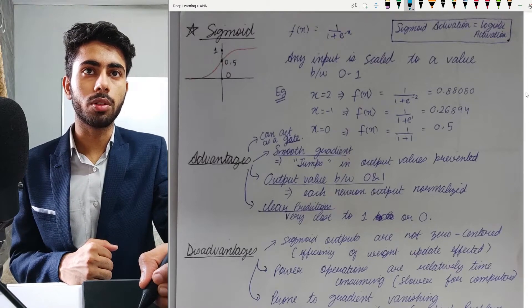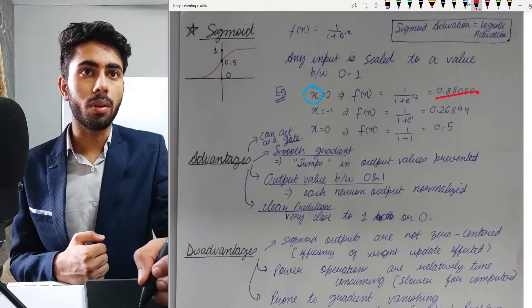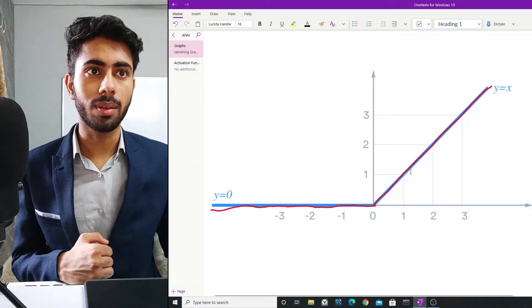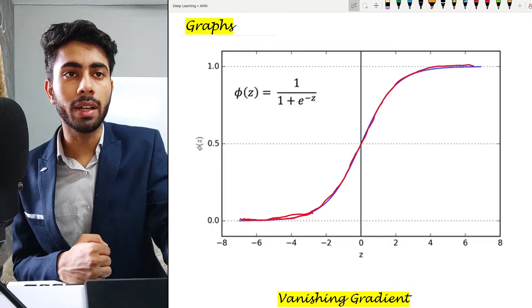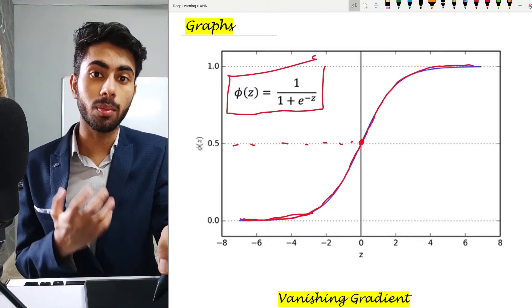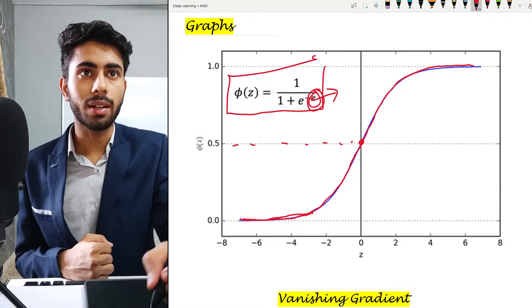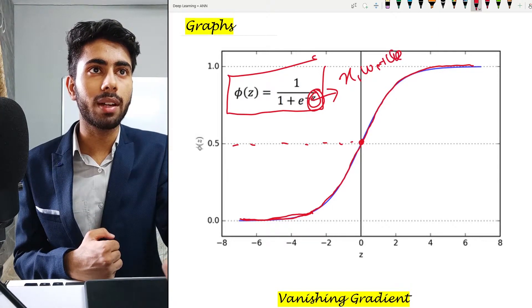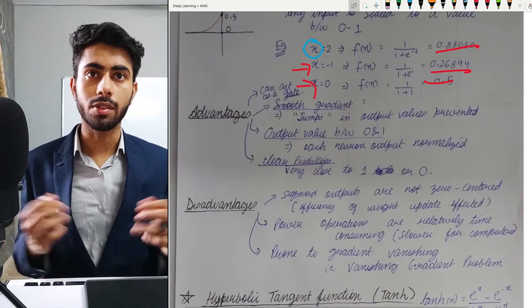For example, if the input x equals 2 — where x is the value obtained after the pre-activation step — it will be converted to a value between 0 and 1, and the same applies for inputs like -1 or 0. Looking at the graph of the sigmoid function, the slope is very smooth. At x = 0, the curve is differentiable and continuous, and the output value is 0.5. The formula uses z, the pre-activation value obtained after multiplying inputs by weights and adding a bias term.